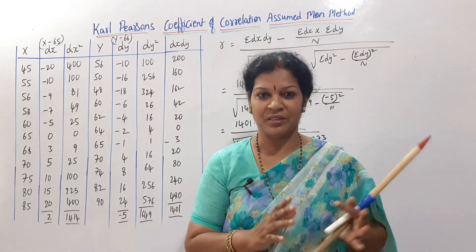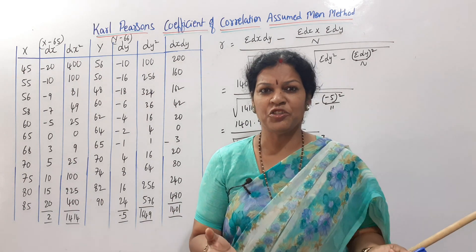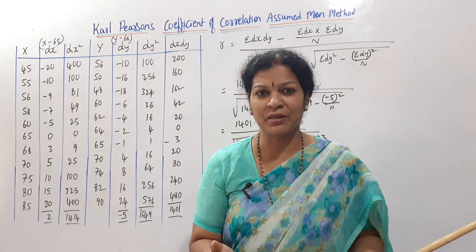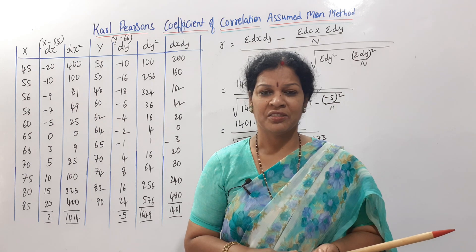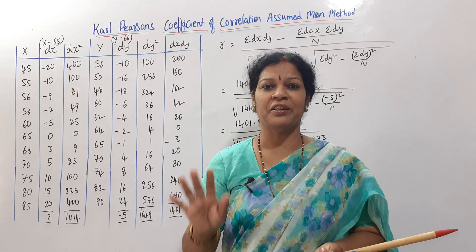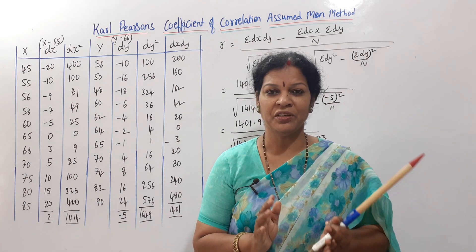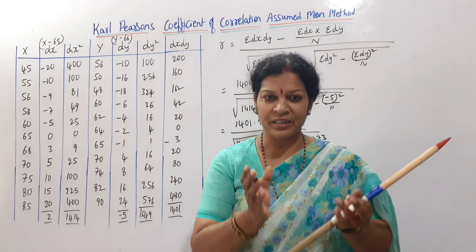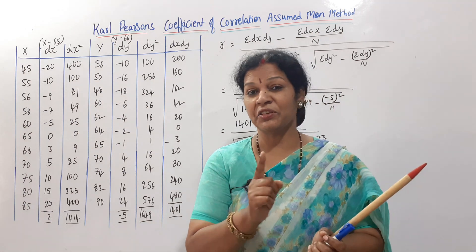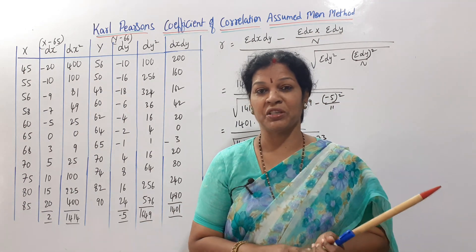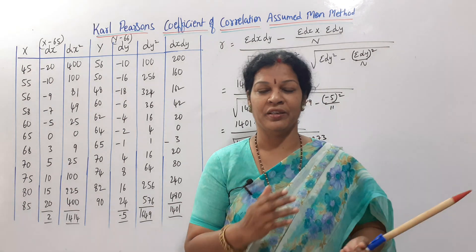In the assumed mean method, we assume some numbers and take deviations from them — the same approach as in standard deviation. Here, two variations will be given: x and y.